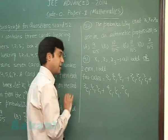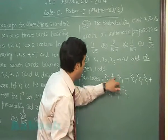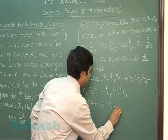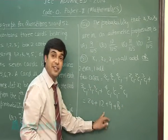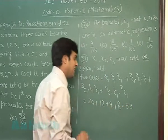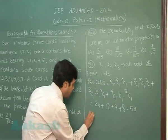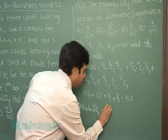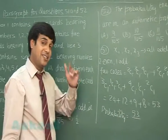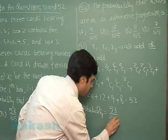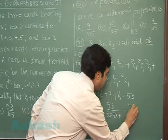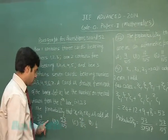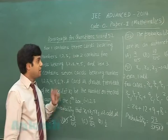Summing up the favorable cases: 24 + 12 + 9 + 8 gives a total of 53 favorable cases. The required probability for question 51 is 53 divided by the total number of cases, which is 3 × 5 × 7 = 105. So the answer is 53/105. The correct answer is B.